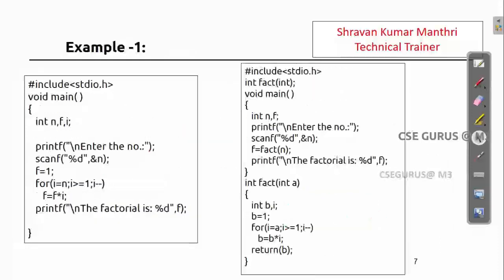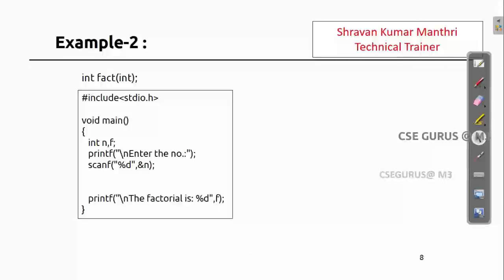Here is the factorial example. Without functions, you compute the factorial directly inline. With functions, you simply call fact(n), the function executes and returns the result into f, and then you print f. This is how to write a program using functions.